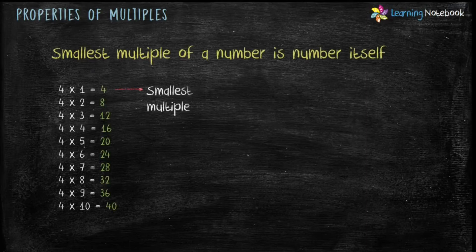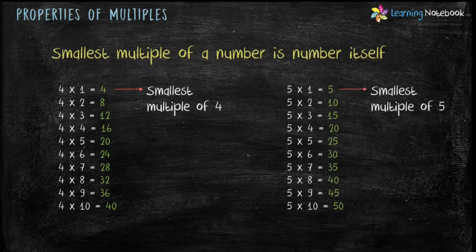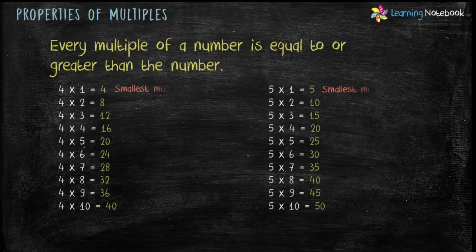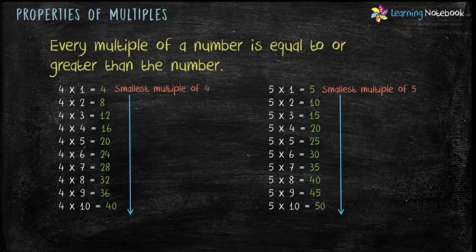The third property is the smallest multiple of a number is the number itself. For example, the smallest multiple of four is four, and the smallest multiple of five is five. The fourth property is every multiple of a number is equal to or greater than the number. So multiples of four — 8, 12, 16 — and all the rest are greater than four. Similarly, multiples of five — 10, 15, 20 — and so on are greater than five.